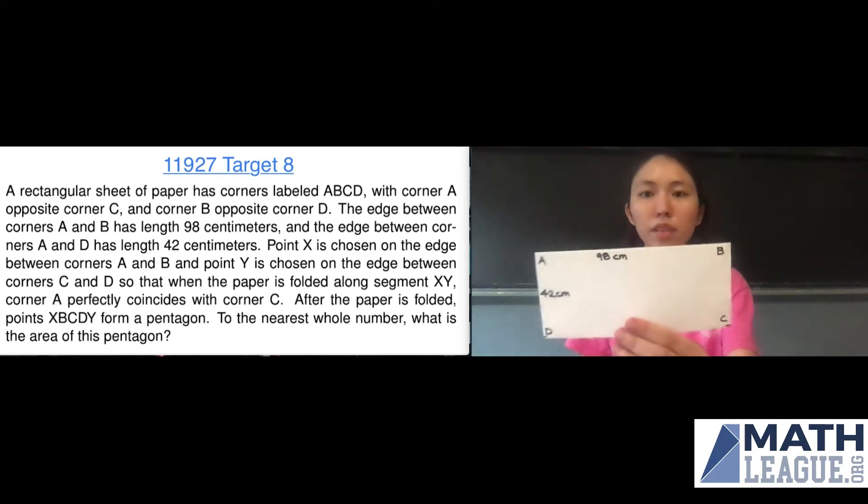So we have the paper as follows. We can see that the edge between corners A and B is indeed 98 centimeters and the edge between corners A and D has length 42 centimeters, and we see that corner A is opposite corner C and corner B is opposite corner D.